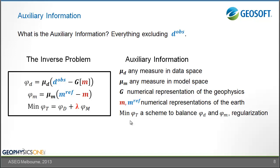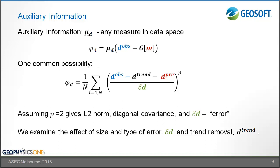The auxiliary information is far more extensive than we could cover in this presentation, so we will only cover selected aspects. One aspect relates to the data measure — we take the observed data at each data point, allow some trend to be removed, normalize by a data error associated with each point, and use a p equals 2 L2 norm summed as our data misfit. We will examine the nature of error assignment and trend removal in the samples that follow.